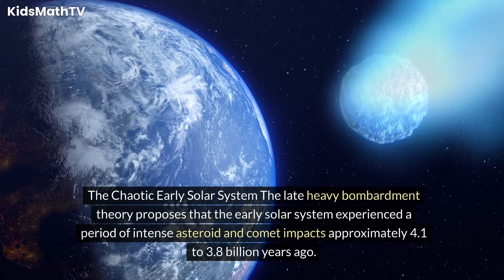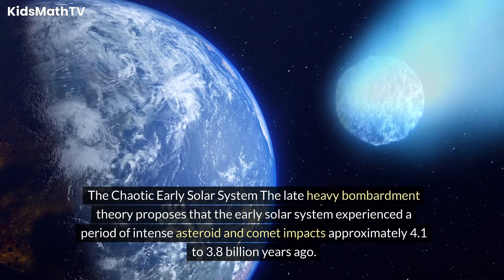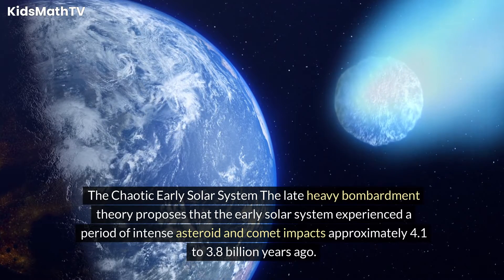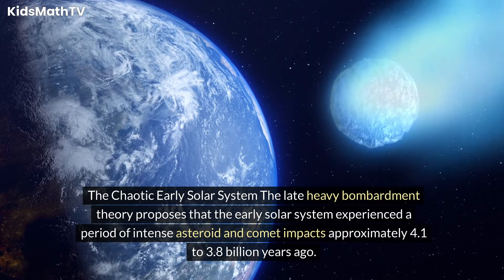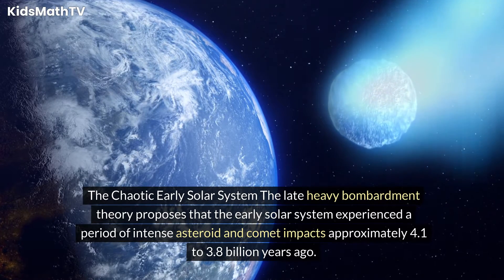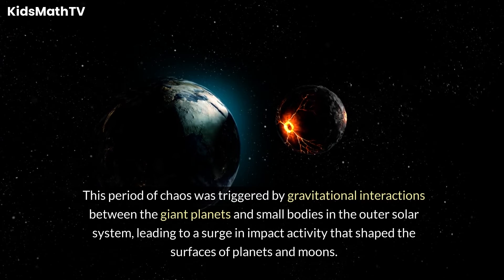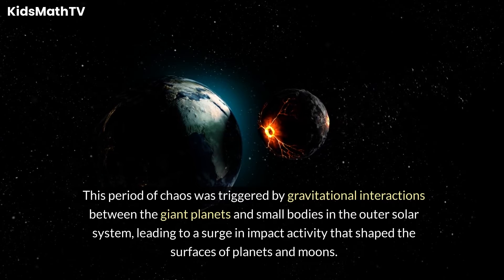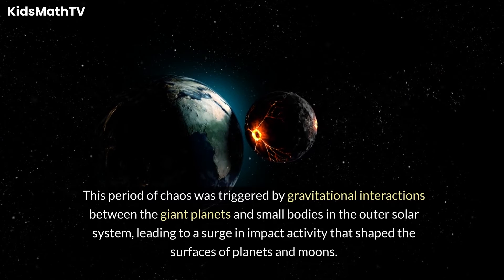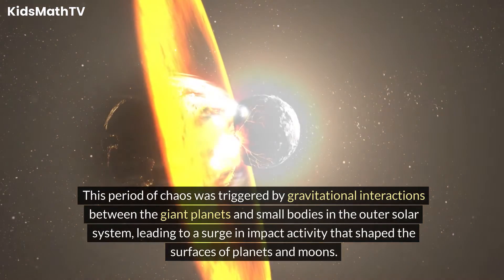The Late Heavy Bombardment Theory proposes that the early solar system experienced a period of intense asteroid and comet impacts approximately 4.1 to 3.8 billion years ago. This period of chaos was triggered by gravitational interactions between the giant planets and small bodies in the outer solar system, leading to a surge in impact activity that shaped the surfaces of planets and moons.